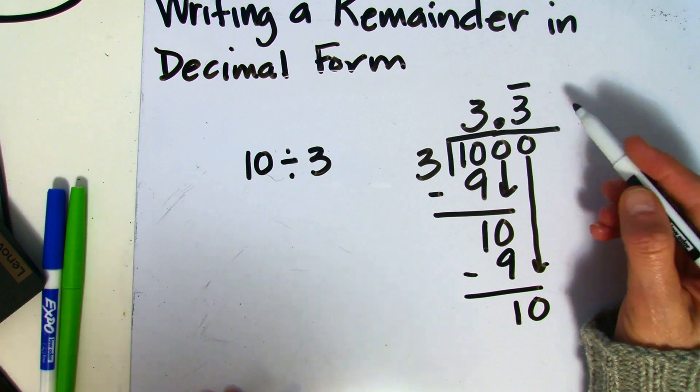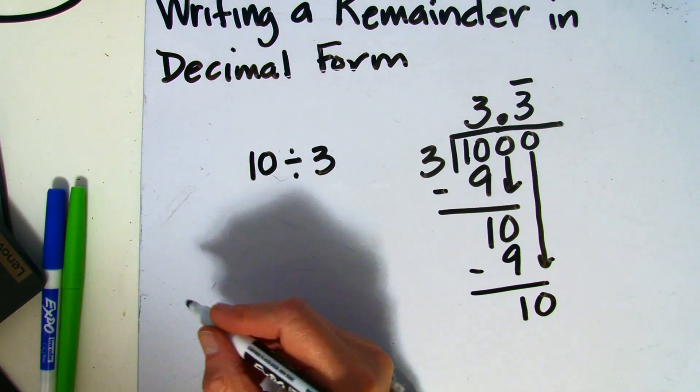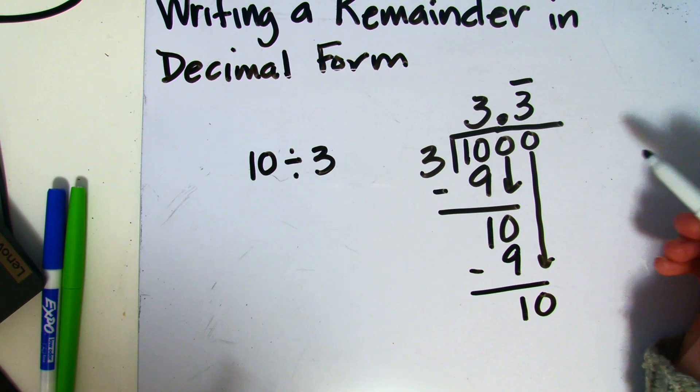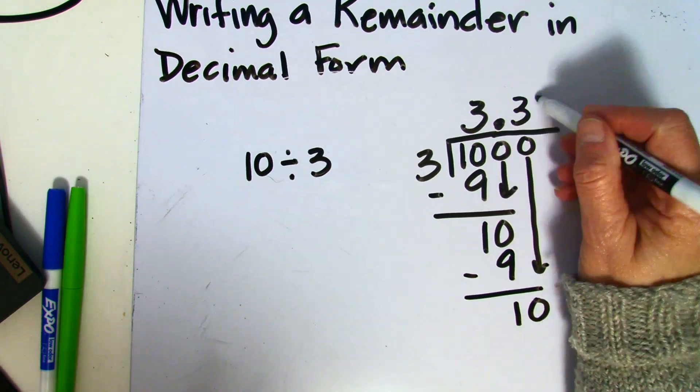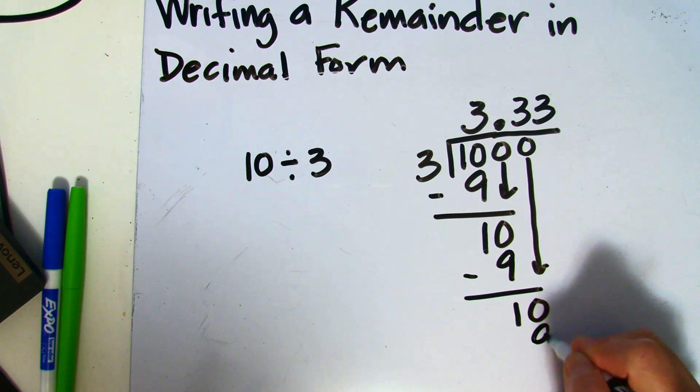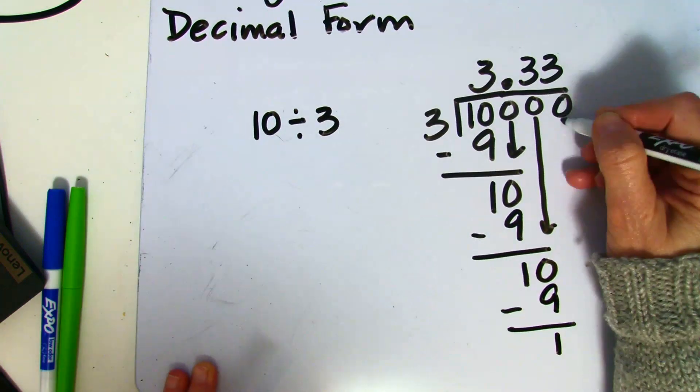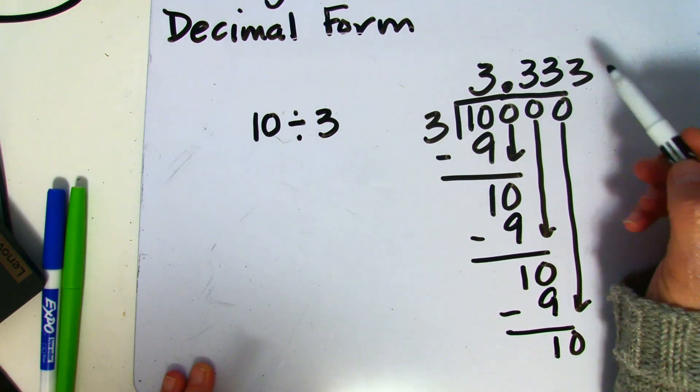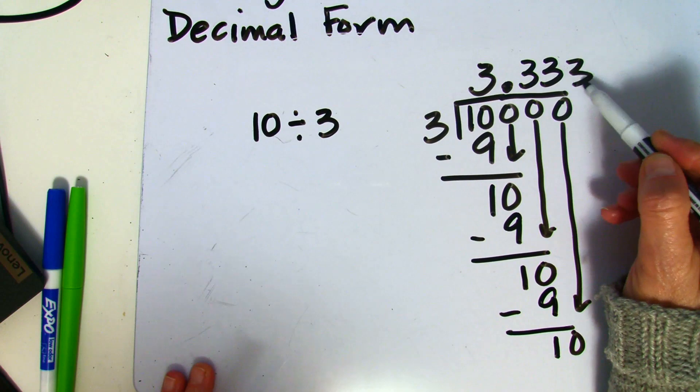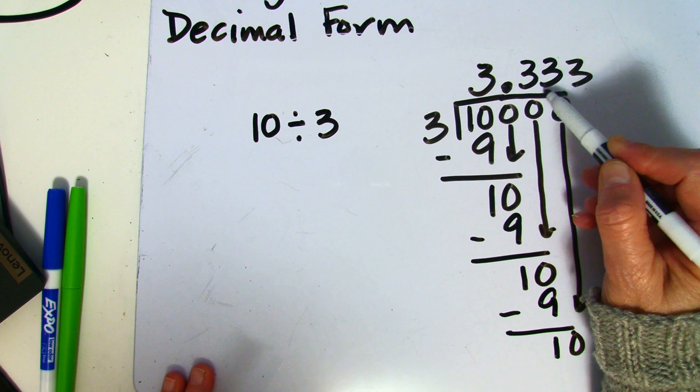Now, if I were to want to round this to the nearest hundredths place, then that means I'd want to go out a little bit more. And because I'm going to stop at the thousandths place, I'm going to identify the hundredths place, which is the 3, the second 3.